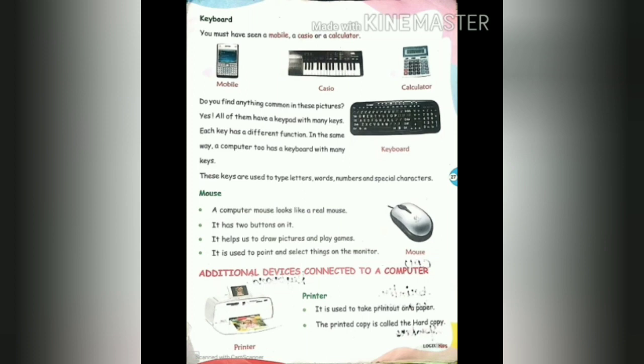Next, additional devices connected to a computer. The first additional device is the printer. It is used to take a printout on paper. The printed copy is called the hard copy. The book which you have in your hand — this paper is also a hard copy. It is printed with the help of a printer.